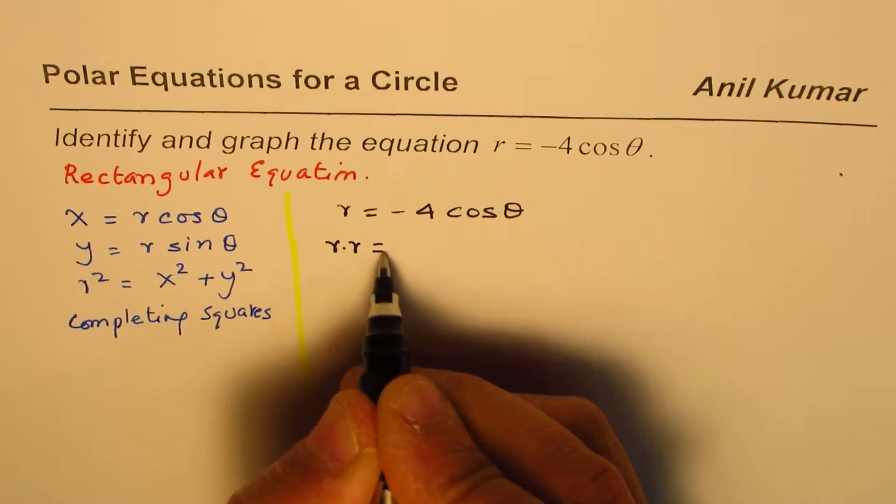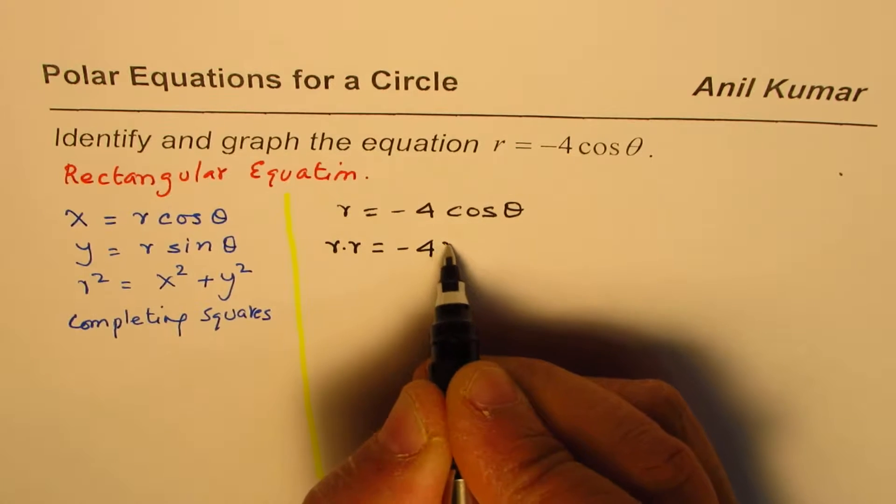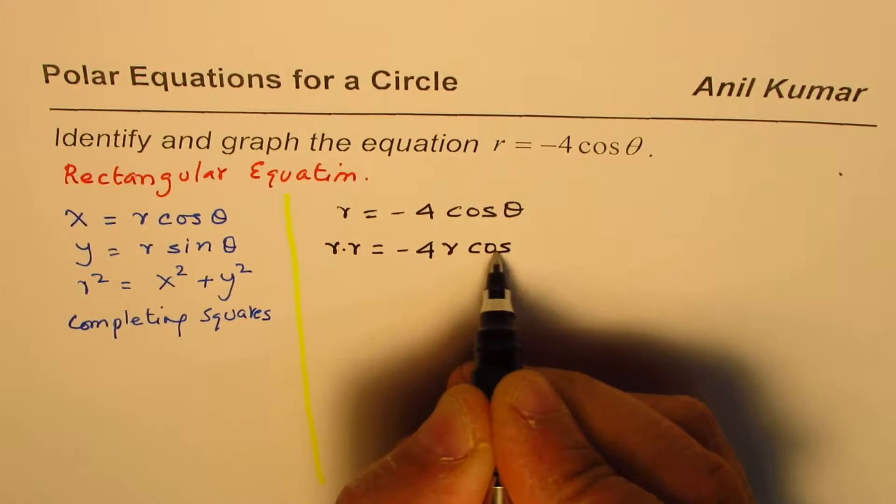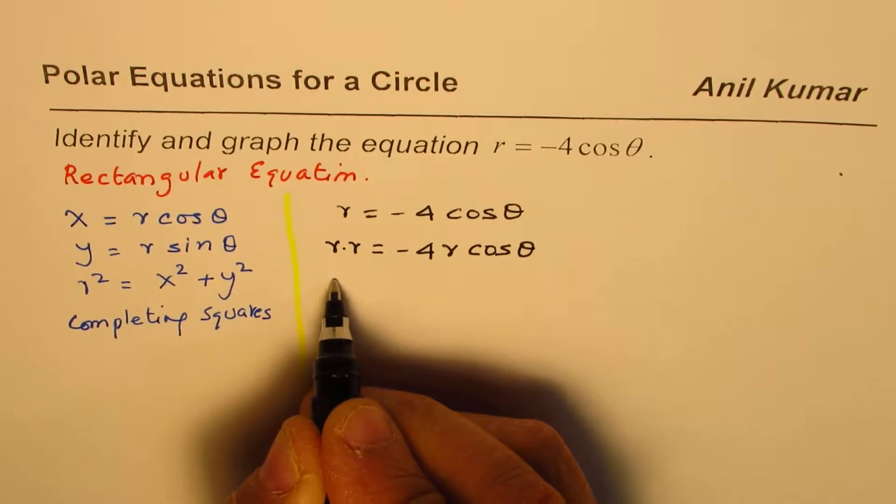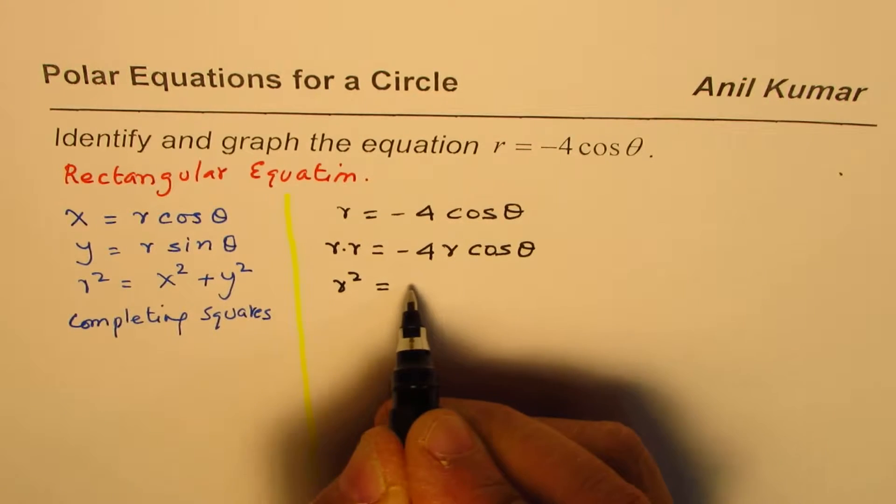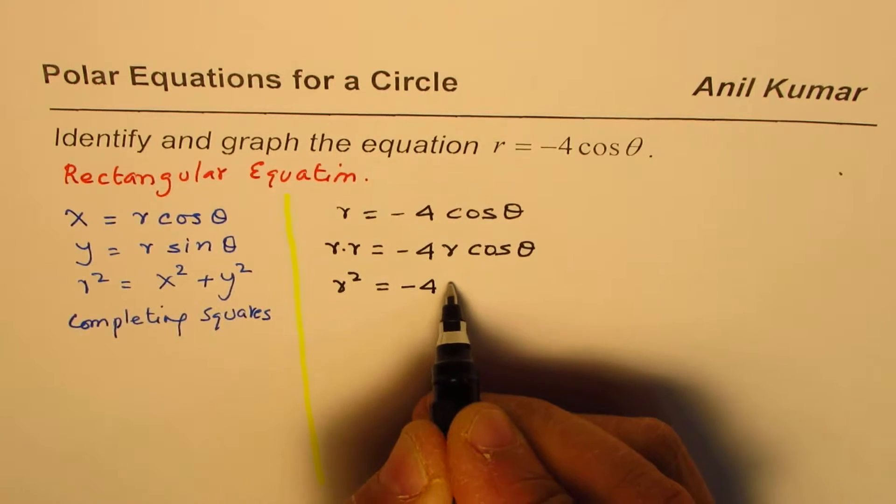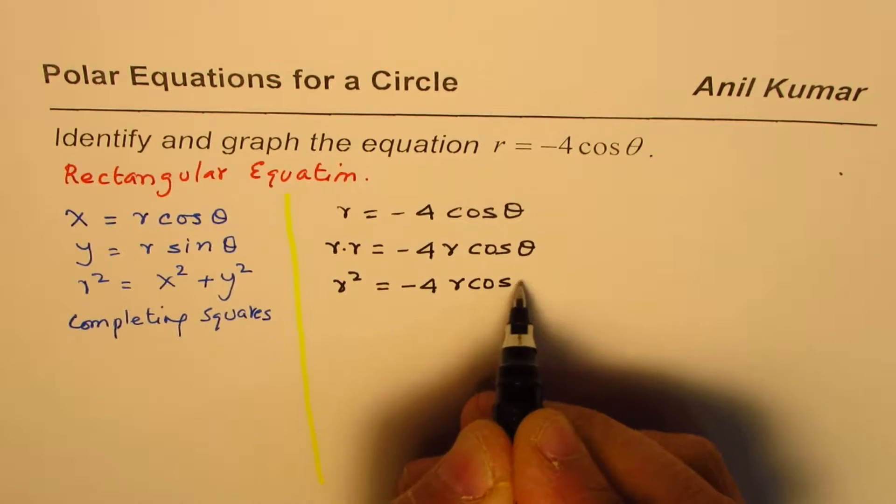To do that, we'll multiply by r on both sides. So, we get r squared equals minus 4r cosine theta. Now, this is r squared. And here, we have minus 4. And we have r cosine theta.